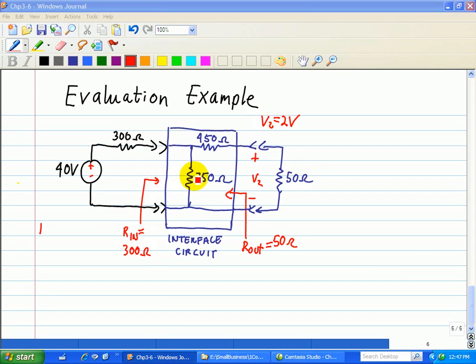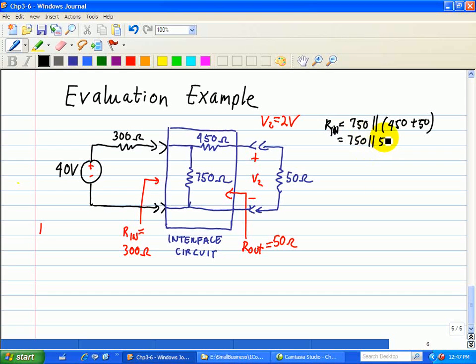Looking at Rin here, we see that this 750 ohm resistor is in parallel to the series combination of 450 ohms plus the 50 ohm load. In other words, Rin is equal to 750 in parallel with the series combination of 450 ohms plus 50 ohms, which is equal to 750 ohms in parallel with 500 ohms, which should be less than 500 ohms and turns out to be less than 300 ohms.